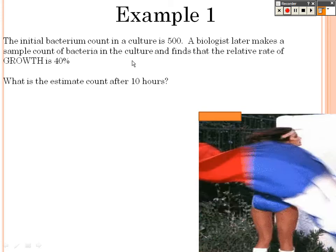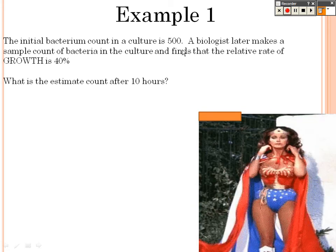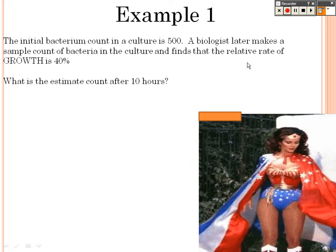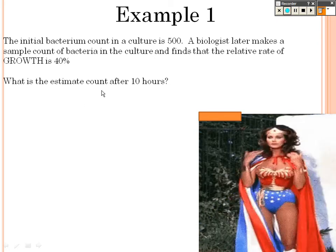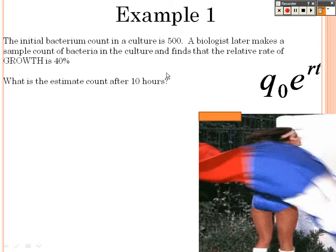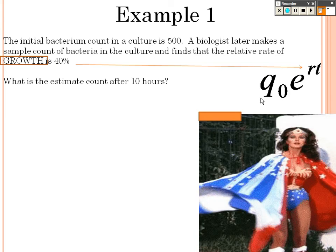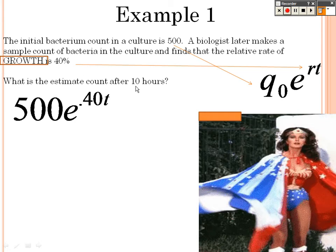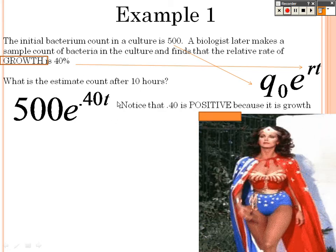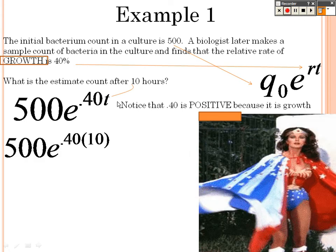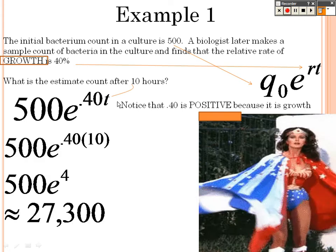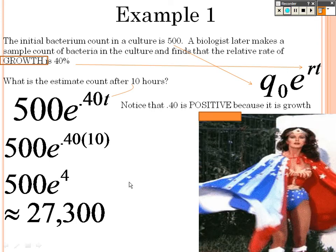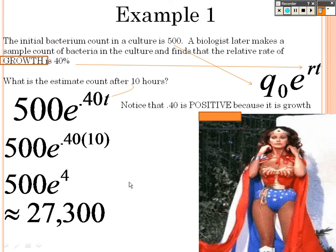The initial bacteria count in a culture is 500. A biologist later makes a sample count of bacteria in a culture and finds that the relative rate of growth is 40%. What is the estimate count after 10 hours? So the initial is 500, the growth rate is 40% which is 0.4, and T is 10. I plug that in and you end up getting about 27,300. So it started at 500 and it grew so quickly that there's now over 27,000 bacteria.